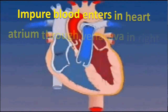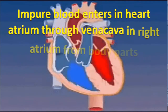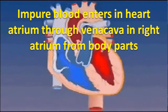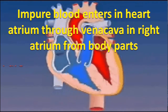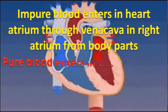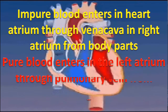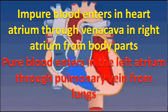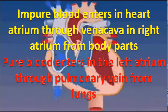Impure blood enters the heart through the vena cava into the right atrium from the body parts. Pure blood enters the left atrium through the pulmonary vein from the lungs.